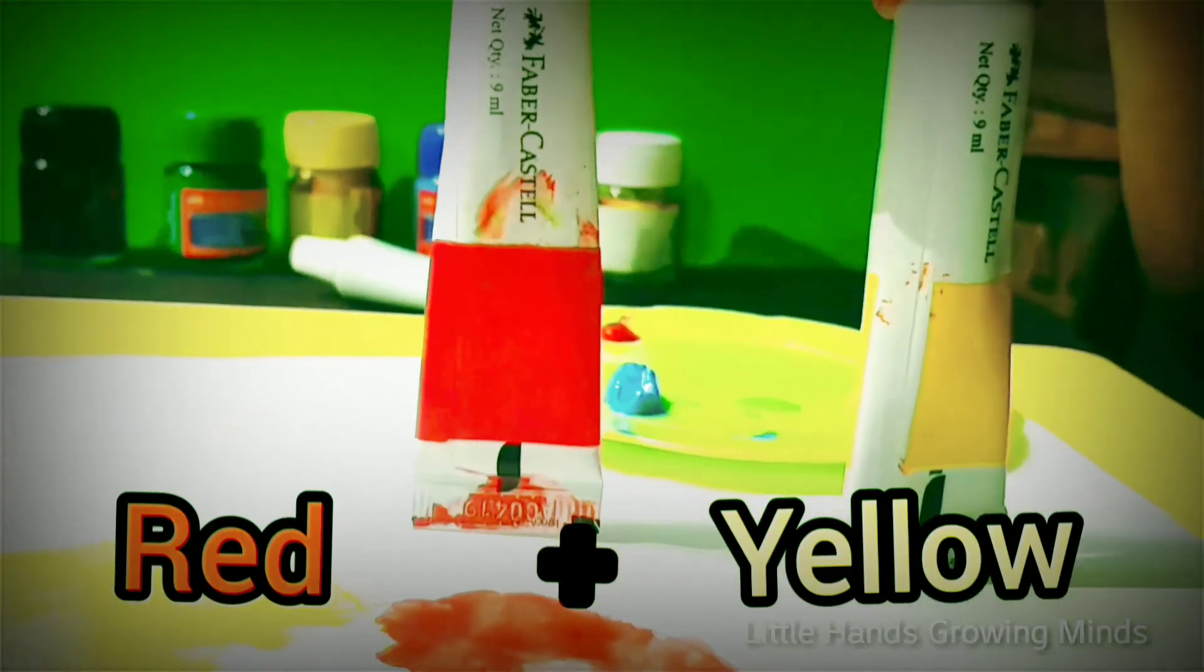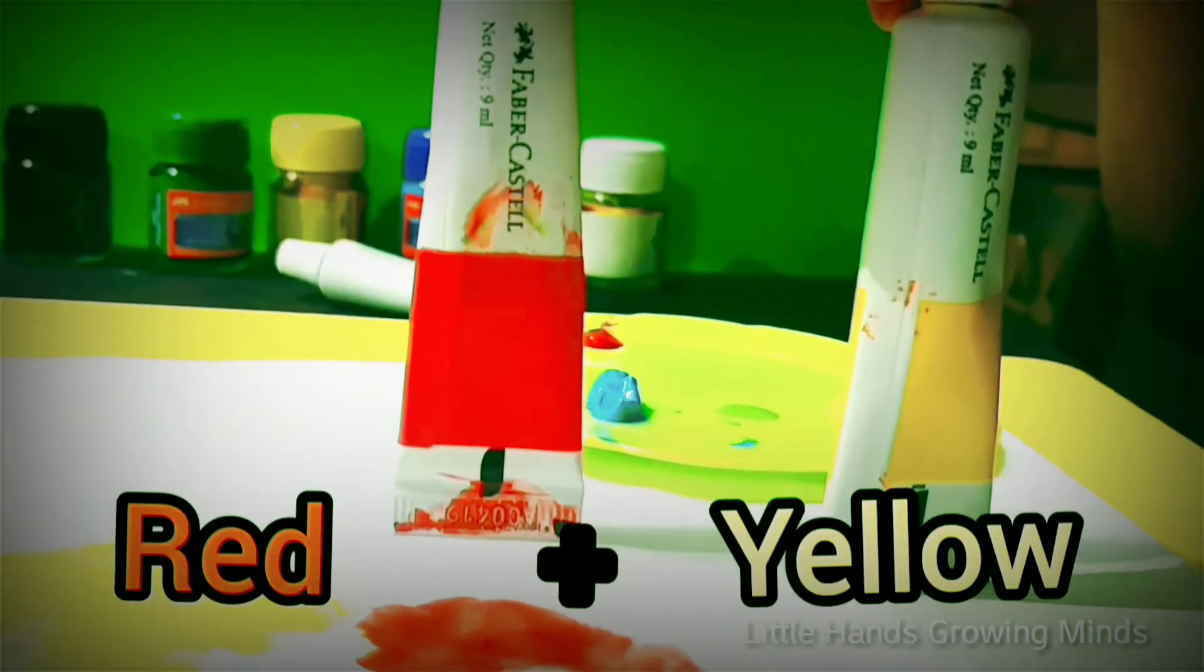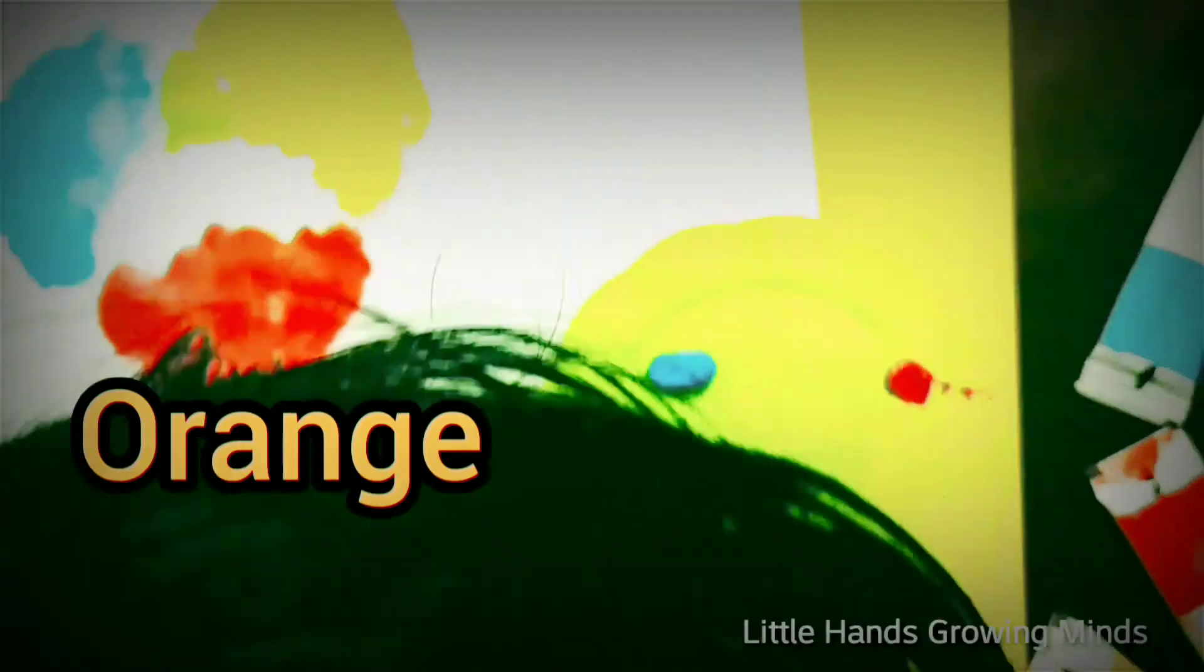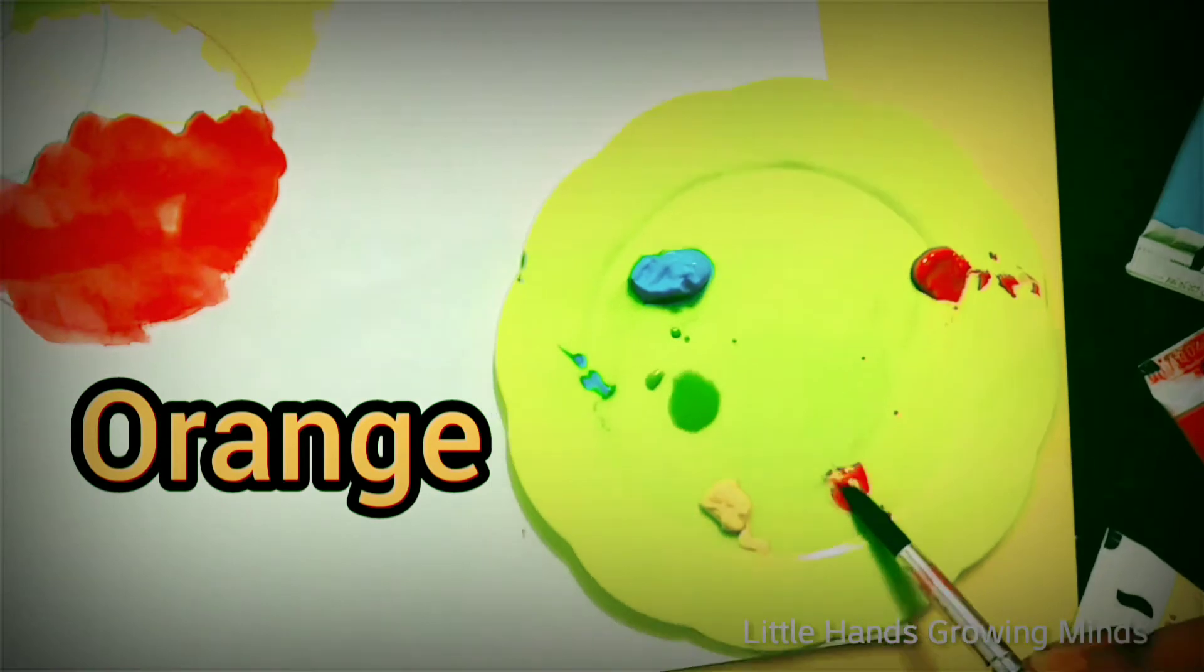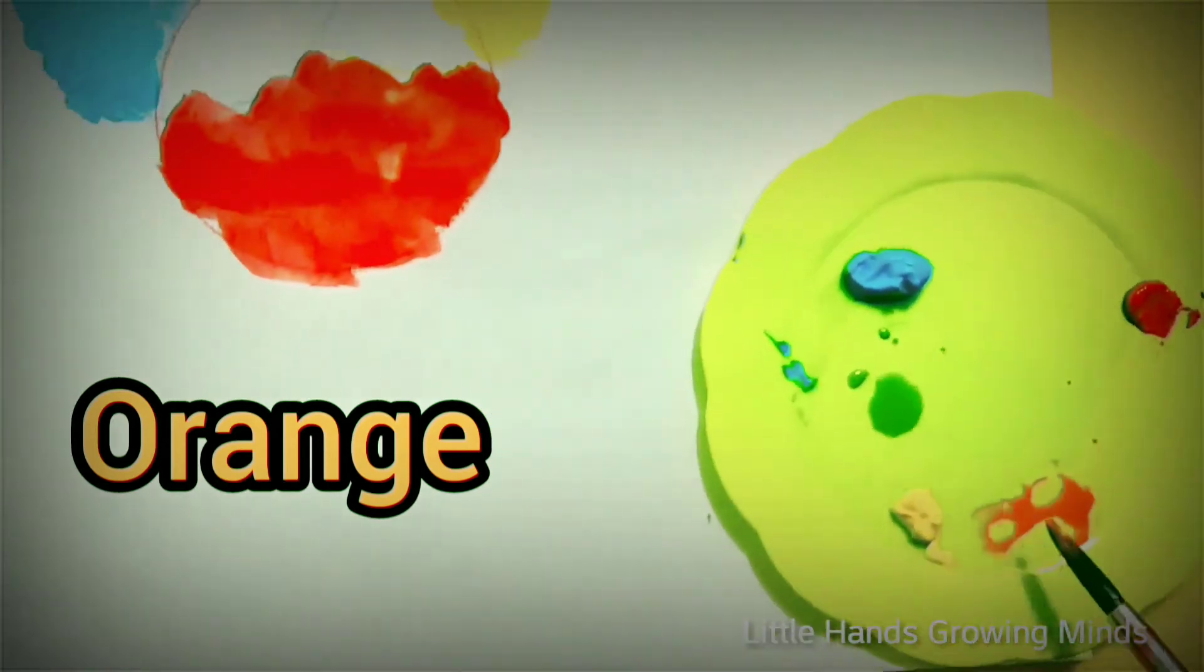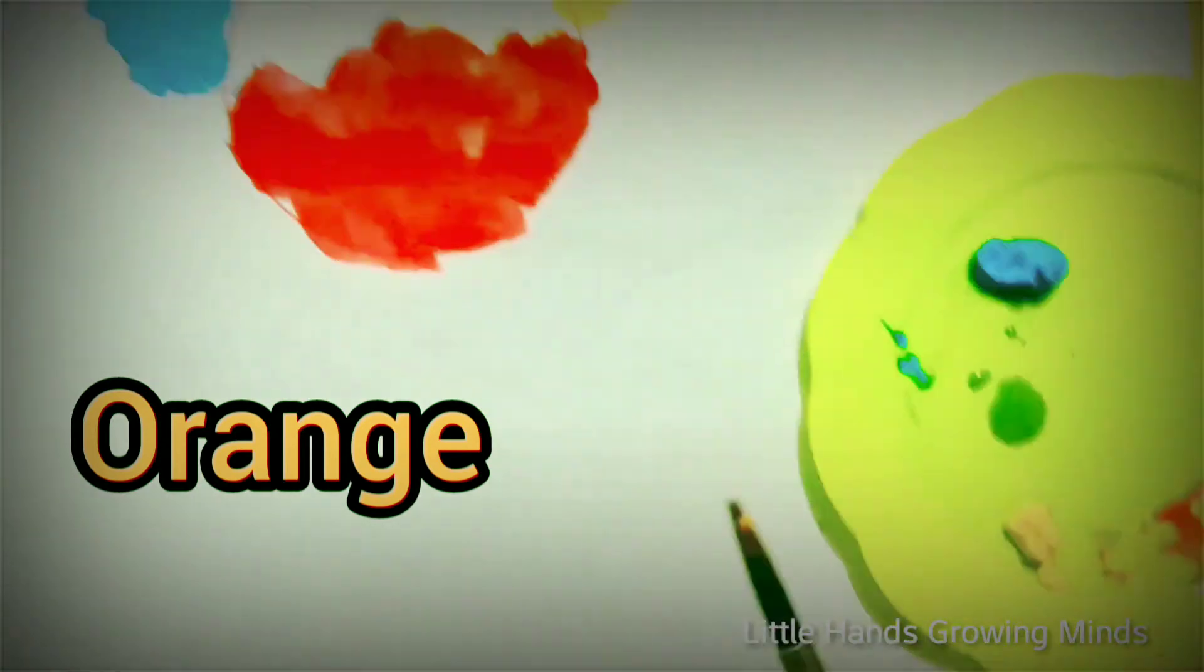Let's see what red and yellow makes. It's orange. Now we can color with orange.